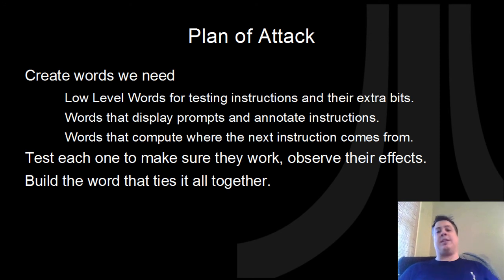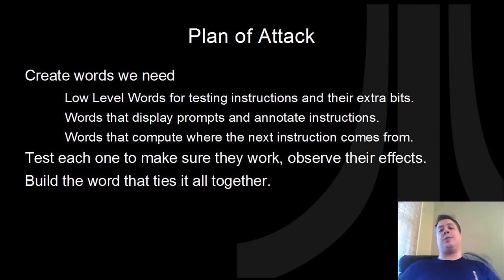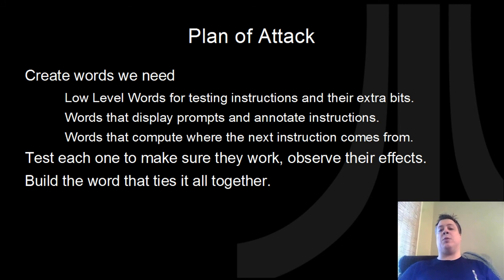We have words that display prompts and annotate individual instructions. If it's a jump instruction, we need the address; if it's a JVB, we also need the address; if it's a mode instruction, we need to know what mode it is; if it's blank lines, we want to know how many are specified. And finally, we have words that compute where the next instruction comes from and calculate certain things like how many blanks there actually are. Once we create the words we need, we test each one to make sure they work, observe their effects on the stack, and make sure they're consuming and producing the right number of things on the stack for the next word that needs to use them. Then we build the word that ties it all together.